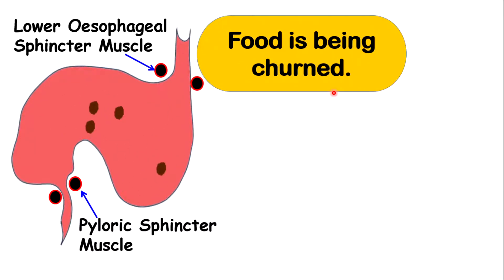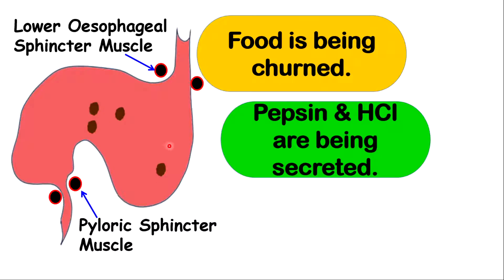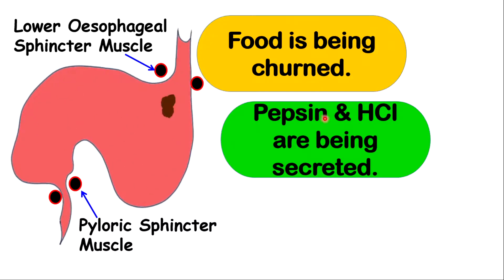In the stomach, food is being churned, so there is physical digestion taking place. Also, pepsin and hydrochloric acid are being secreted. Pepsin is an enzyme responsible for breaking down protein, so there is also chemical digestion taking place. Hydrochloric acid creates the optimal condition for pepsin to work.